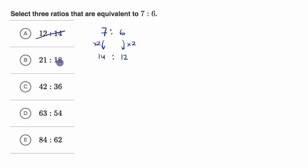Now let's think about 21 to 18. To go from seven to 21, we would multiply by three. And to go from six to 18, you would also multiply by three. So that works. If we multiply both of these numbers by three, we get 21 to 18, so let me circle that in. That one is for sure equivalent.